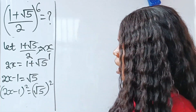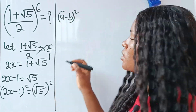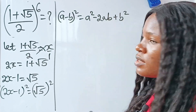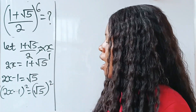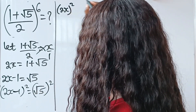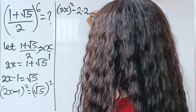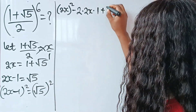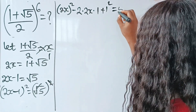Now, when you have (a − b)², this is equal to a² − 2ab + b². So that means we can write this as: our a is 2x, our b is 1. So a² is (2x)², minus 2ab which is 2 × 2x × 1, plus b² which is 1². This equals 5, since (√5)² = 5.